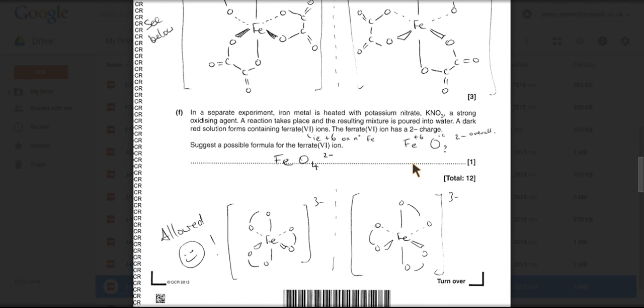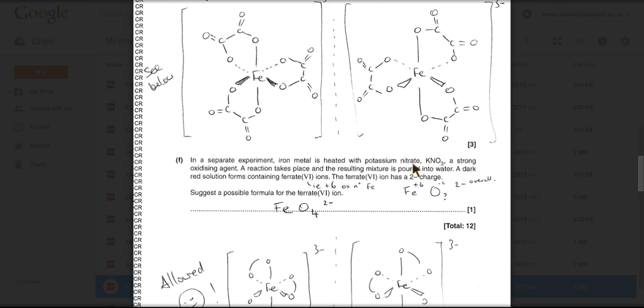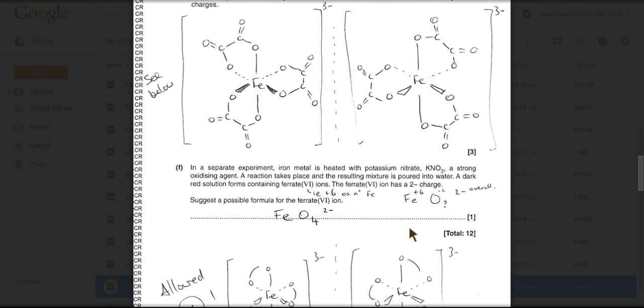And then the last part of the question: in a separate experiment, iron metal is heated with potassium nitrate KNO3, which is a strong oxidizing agent, reaction takes place, and the important thing here is we've got a red solution formed which contains the ferrate(VI) ion. Ferrate(VI) ions have an overall 2- charge, so we have to work out a possible formula for ferrate(VI) ions.